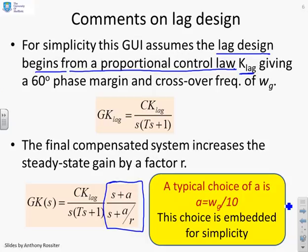Now a typical choice of a is going to be omega_g over 10, where omega_g is the gain crossover frequency, and that's standard in lag design.